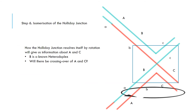The Holliday junction will be isomerised. This means it will rotate to create the cross shown. The way it resolves itself will give us information regarding how the A and C regions will react. We already know that B is a heteroduplex, but we will further discover whether crossing over occurs.